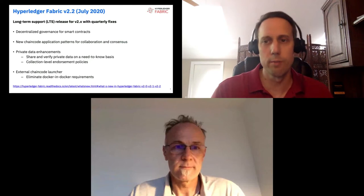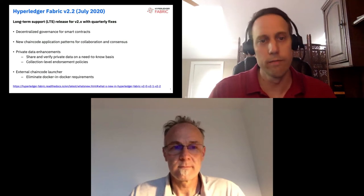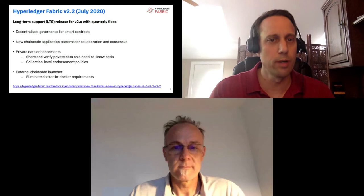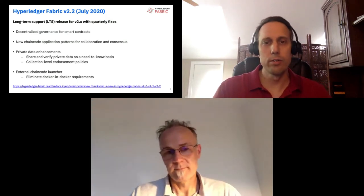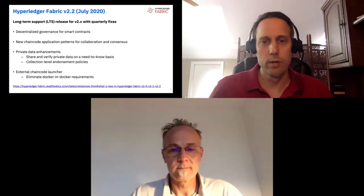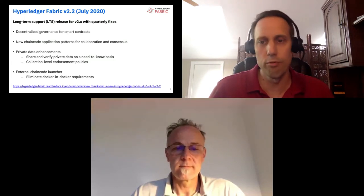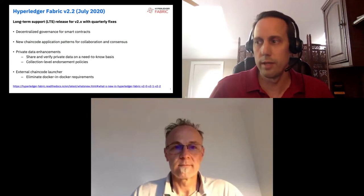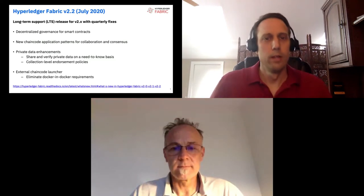First and foremost, we have decentralized governance of smart contracts. You can now have policies that dictate which organizations must agree before a smart contract is deployed or updated, or for example to change the endorsement policy for a contract. You can also use this same architecture and patterns in your own user chaincodes to implement business approval processes.